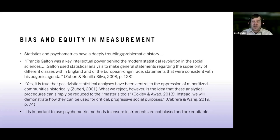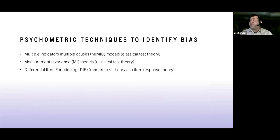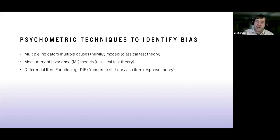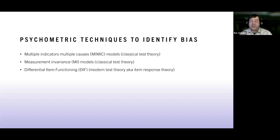We're talking about three main modern psychometric techniques to identify biases — this is not an exhaustive list. The first is the MIMIC model (multiple indicator multiple causes), from a classical test theory perspective: true score plus error equals our observed score. The second is the measurement invariance model, from a structural equation modeling perspective — still classical test theory but a bit stronger and more precise than MIMIC.